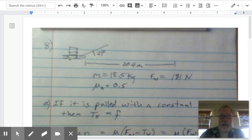And what we had was a sled that had a couple bricks on it, and then we have a rope that's being pulled 21 degrees to the horizontal. And the sled's going to be pulled a distance of 20.4 meters.